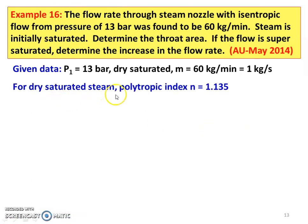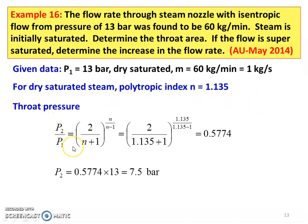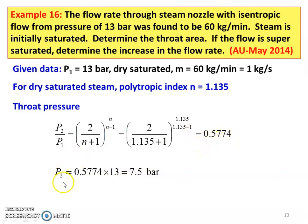For dry saturated steam, polytropic index N = 1.135. The throat pressure for maximum mass flow rate: P2/P1 = (2/(N+1))^(N/(N-1)). Substituting: 2/(1.135+1) to the power 1.135/(1.135-1) = 0.5774. So throat pressure P2 = 0.5774 × 13 = 7.5 bar.